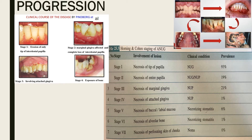The clinical course described by Pindborg et al. progresses in four stages: Stage 1 — erosion of only the tip of the interdental papilla; Stage 2 — marginal gingiva is also involved; Stage 3 — attached gingiva is involved; Stage 4 — exposure of bone.